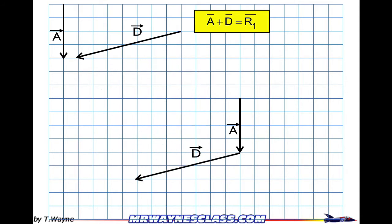So D's got to go down two blocks, and it's got to go over seven blocks, so it matches the D that's up there at the top. And they're connecting tip to tail, which is our rule for addition.